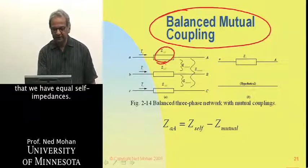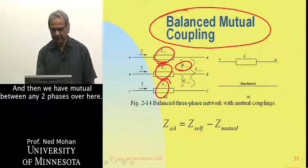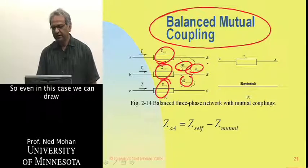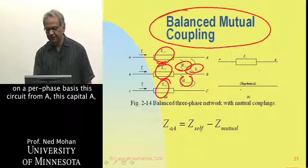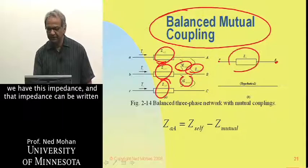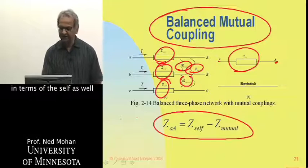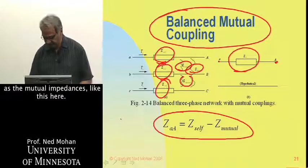In a balanced condition, we have equal self-impedances and equal mutual impedances between any two phases. Even in this case, we can draw on a per-phase basis a circuit from A, with an impedance that can be written in terms of both the self and mutual impedances.